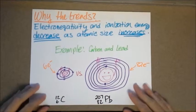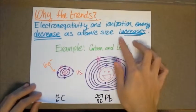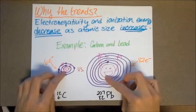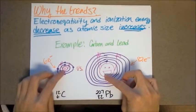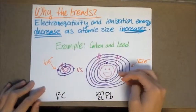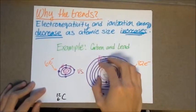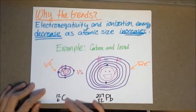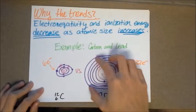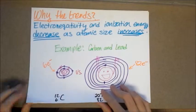So why do we have these periodic trends? Electronegativity and ionization energy actually decrease as atomic size increases. The reason for this is that these protons have certain ways of pulling on these valence electrons. If you have more protons, such as in this lead atom, you exert more pull on your valence electrons than say an atom of carbon, which only has a positive six charge in the nucleus. Therefore, the lead will pull more strongly on its valence electrons than the carbon atom will.